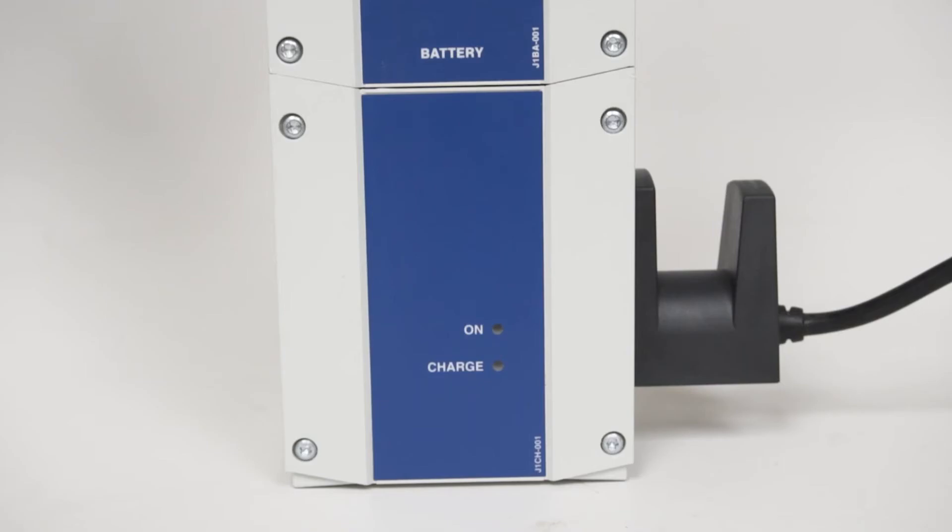Two lights will illuminate on the control box. A green on light, which indicates the charger is plugged into the wall, and a yellow charge light, which indicates the system is charging.